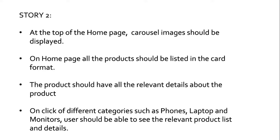Let's see what Story 2 talks about. At the top of the home page, carousel images should be displayed. All the products should be listed in card format. The product should have all the relevant details, and on click of different categories such as phones, laptops, and monitors, users should be able to see the relevant product list and details. Story 2 majorly talks about only the UI part.